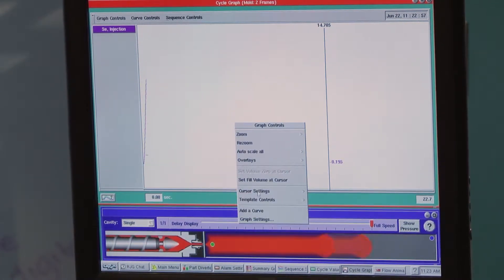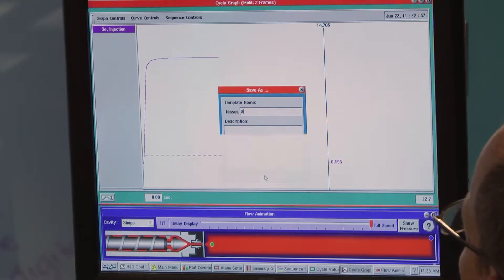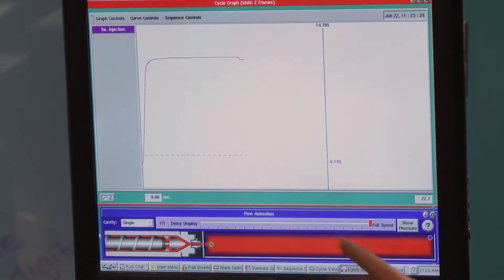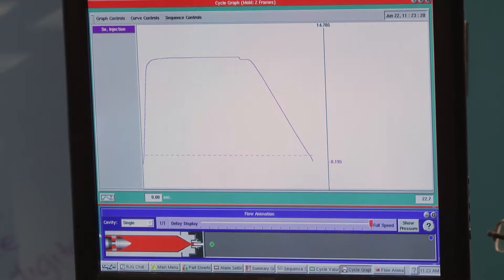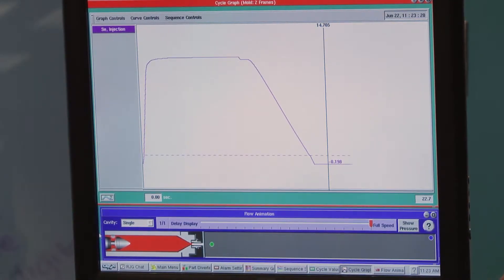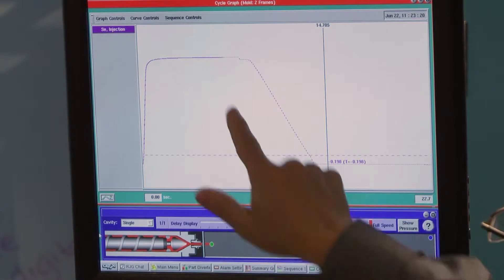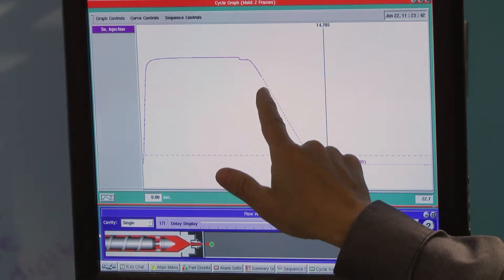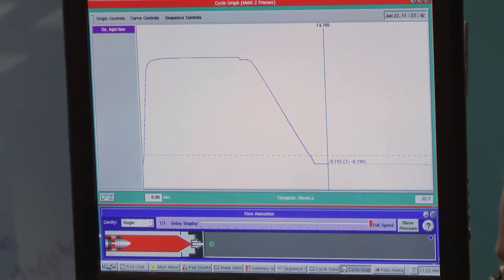I'm going to go ahead and save a template that at the end of the cycle will show a dashed curve and will allow us to see what the process looks like when it's running in its normal state. Give it just one moment. And now we can see the solid curve represents the current process, and the dashed line shows where the process should be.